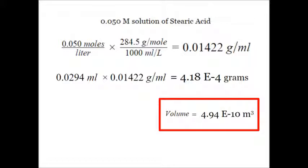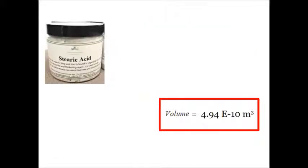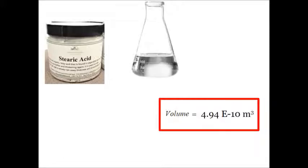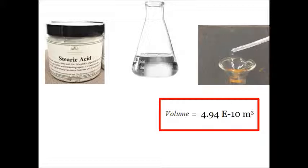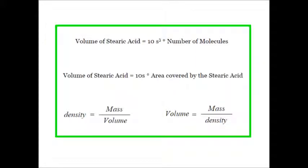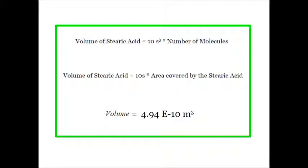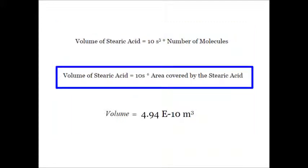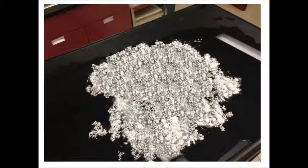We've been careful about what stearic acid is, how it was prepared in the laboratory, how we made our solution, and how we dropped it into our experiment. We know the volume and the mass. One method of finding volume: done. We know the volume of stearic acid, and using that we can look at the volume as 10s times the area covered by that acid.